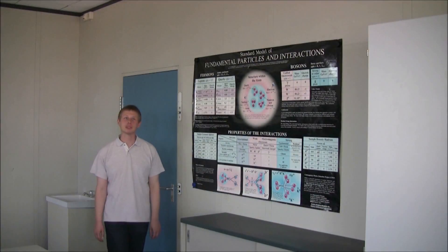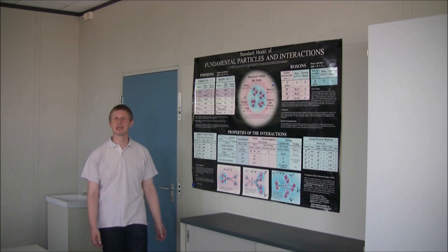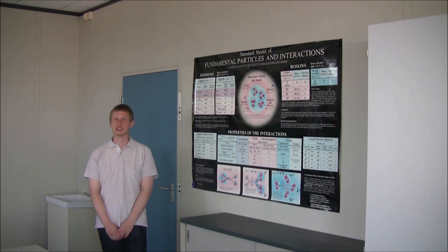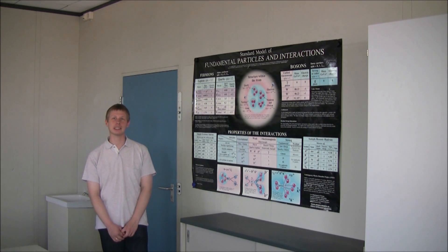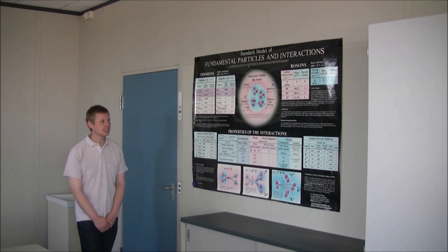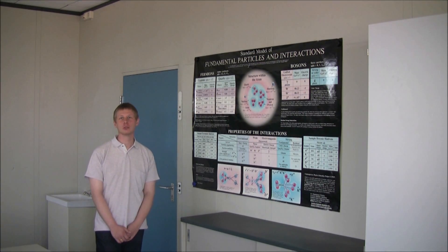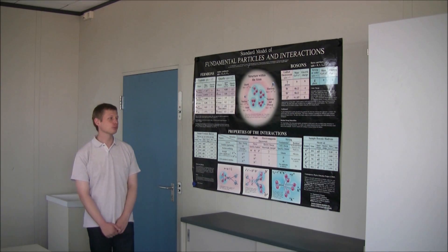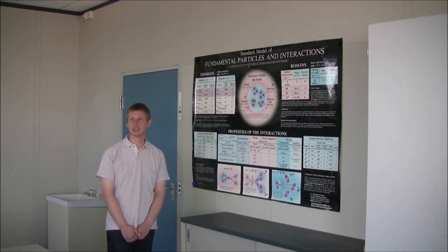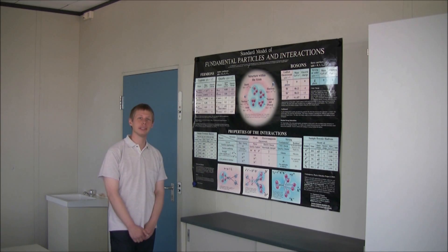Neben den schon besprochenen Up- und Down-Quarks und Elektronen gibt es von jedem noch zwei schwerere Kopien. Diese können nur in Teilchenbeschleuniger-Experimenten erzeugt werden und zerfallen sehr schnell wieder. Dies vervollständigt unser momentanes Bild der bekannten Materieteilchen. Daneben gibt es noch die Austauschteilchen: Für die elektromagnetischen Wechselwirkungen ist es das Photon, also Licht. Für die Farbladung ist das Gluon zuständig, als Vermittler der starken Wechselwirkung. Außerdem als Vermittler der schwachen Wechselwirkung gibt es noch die W- und Z-Bosonen.